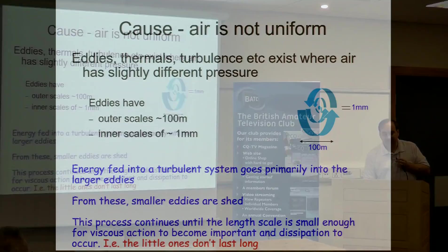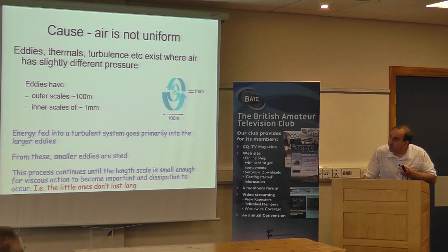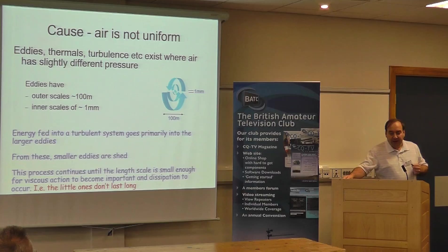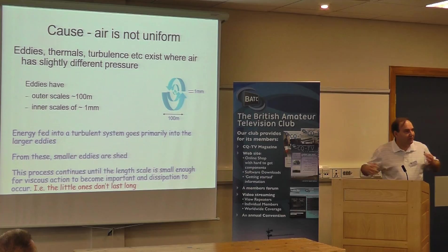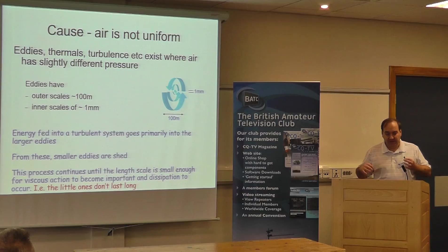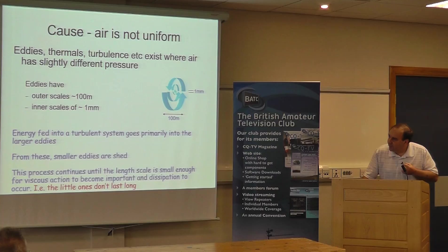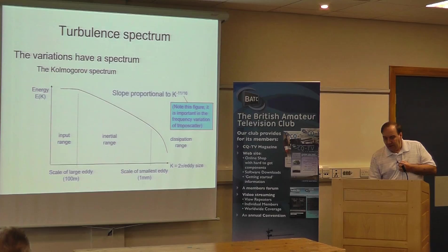You get eddies in the atmosphere with scales of a few hundred metres. Those cause smaller eddies and so on, down to about a millimetre or two, at which point it all disappears into normality. The scale length is important because it gives you an idea of what frequencies are most likely to be scattered by tropospheric scatter. There's a Kolmogorov spectrum, which says the slope is proportional to the turbulence factor to the power minus 11/16ths.